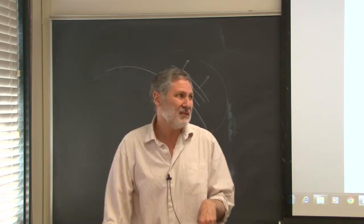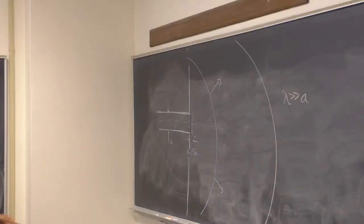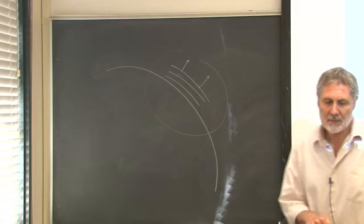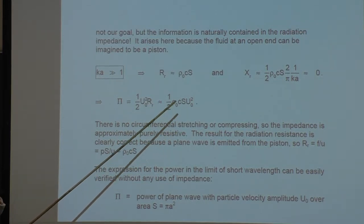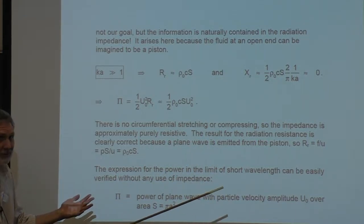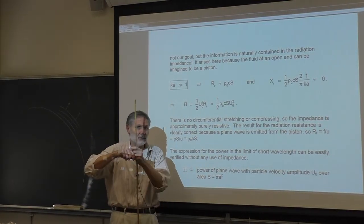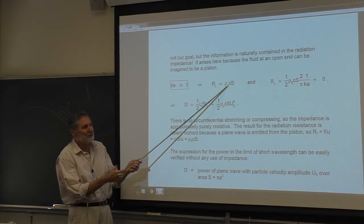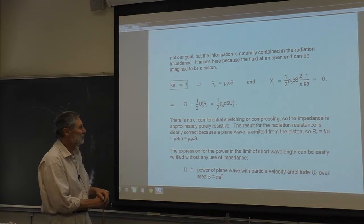In the high-frequency limit for the baffled piston, the expressions reduce to what they must: there is no reactance — it's like driving a string, all resistive. The radiation impedance is the wave impedance ρ₀c times the area S. This is the same result we found for the sphere in the high-frequency limit and makes physical sense because at small wavelengths the surface looks locally like a plane wave.